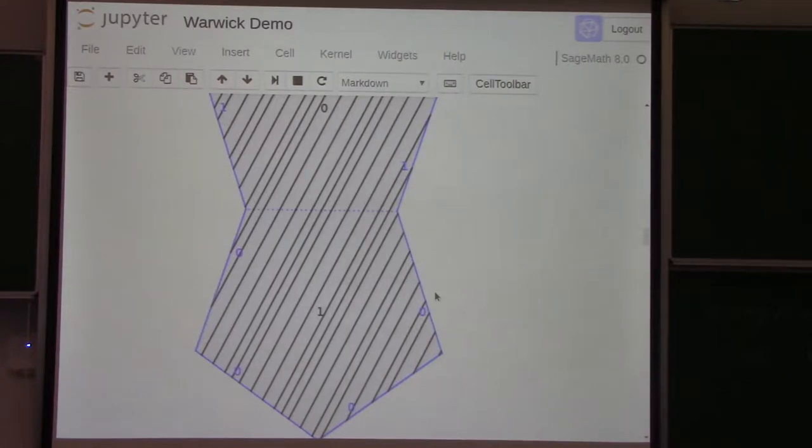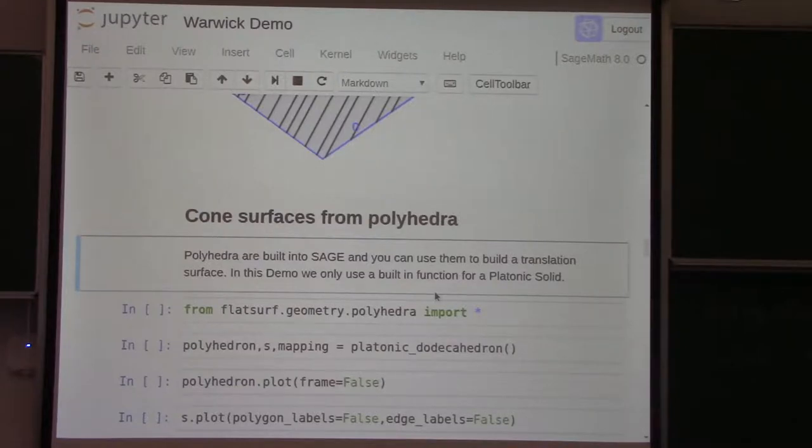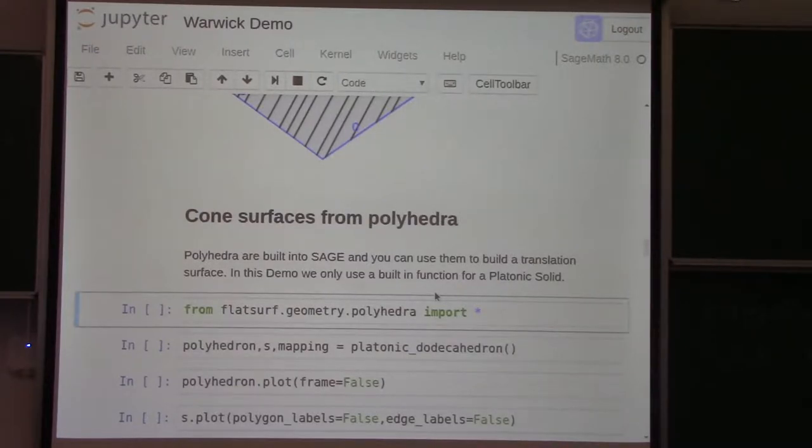I should have to say like, so this is a translation surface. This program handles much more general things. So it handles half translation surfaces as well. It also handles cone surfaces, including cone surfaces. It handles similarity surfaces. Do you know what those are? It's sort of anything in between basically. So you can draw trajectories. There's some things you can't do. Like it doesn't make sense to have a matrix action on cone surfaces.